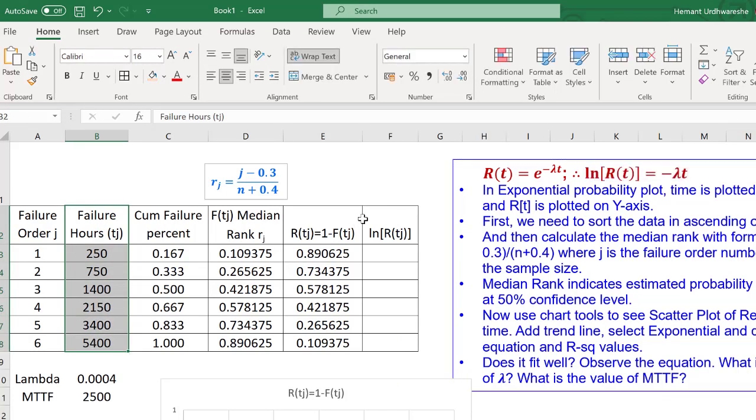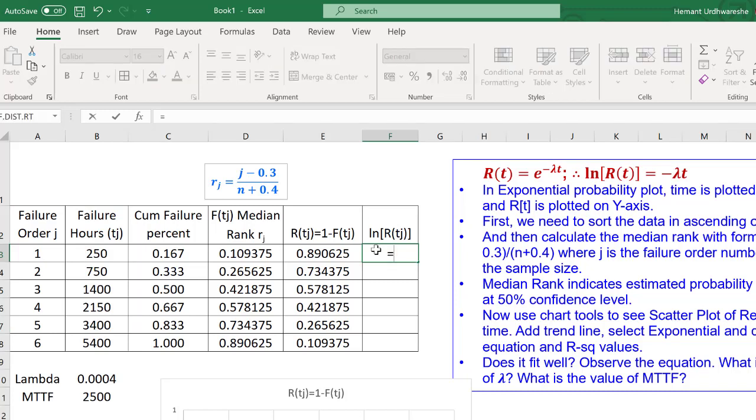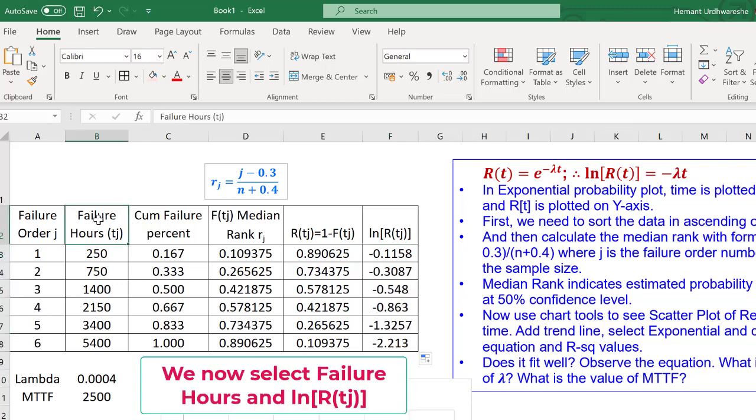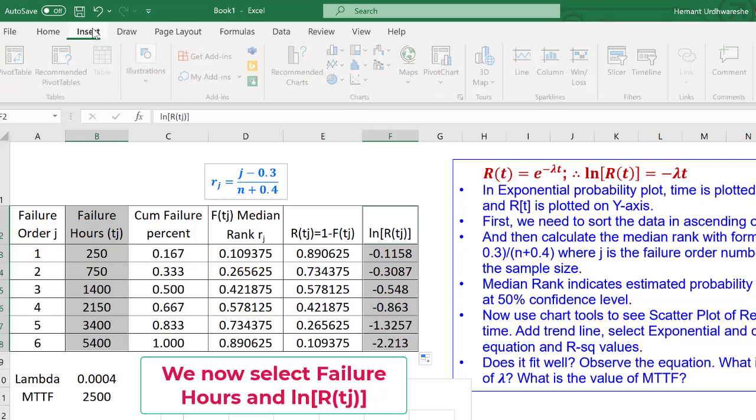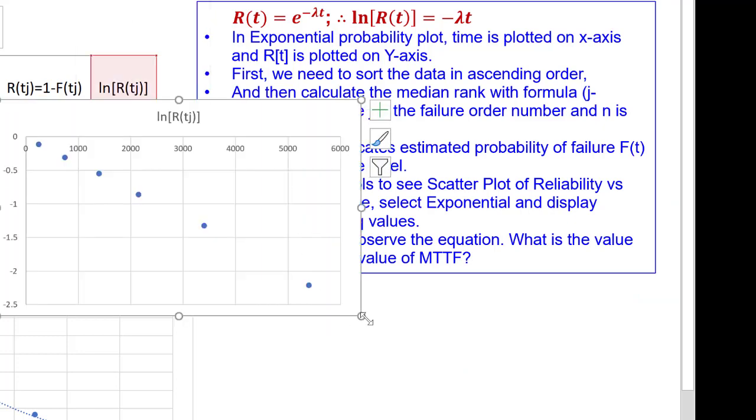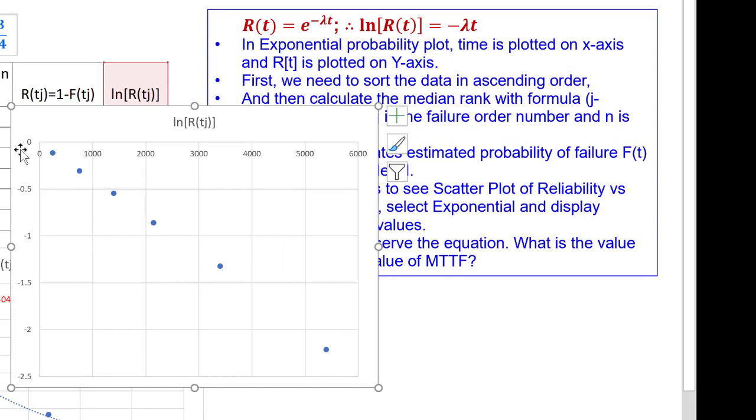In that case, we select the failure hours. Press control button. In that case, we will have to calculate the logarithm of reliability. So, I will say equal to ln of reliability. That will be a negative number. These are the logarithm values. Now, I select the failure hours. Press the control button and select the ln of reliability. And now, I again insert a scatter plot.